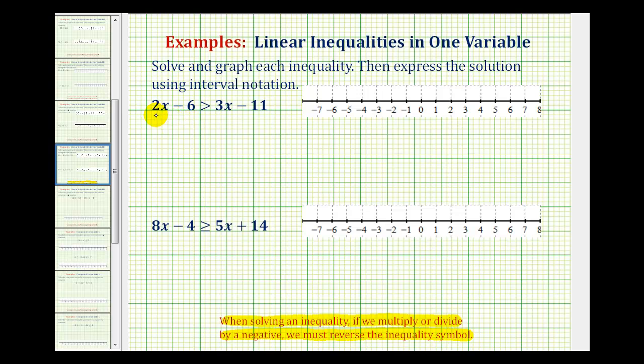Looking at our first example, notice we have variable terms on both sides of the inequality. So the first step is to get the variable terms on one side. And since we normally prefer to have the variables on the left side of an inequality, to undo this positive 3x, we'll subtract 3x on both sides of the inequality.